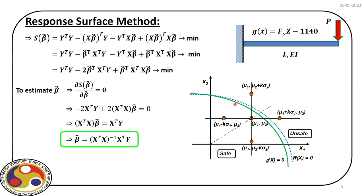Graphically, we have an original performance function g(x)=0 that we replace with r(x)=0. For that we create support points — a quadratic polynomial without cross terms has 2n+1 support points. Using the value of the limit state at these points we fit the dotted line r(x), where r stands for the response surface. Once we have r(x), we can adopt gradient-based or simulation-based approaches to solve the reliability problem. That is how we use a metamodel for reliability analysis.